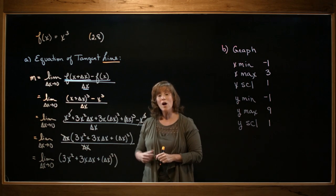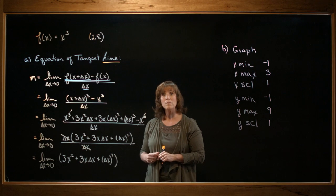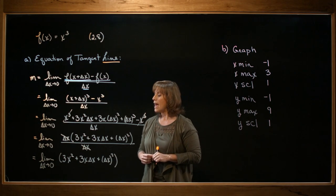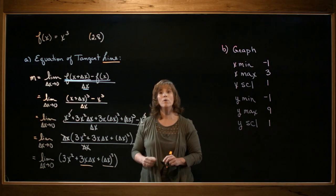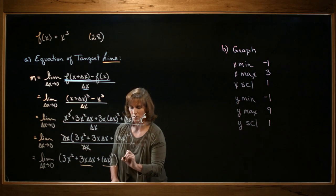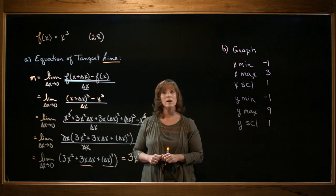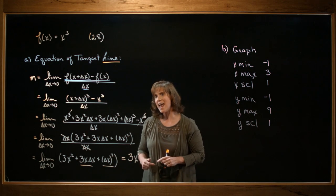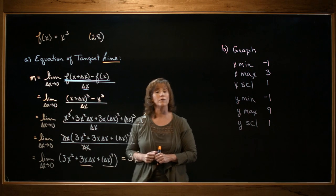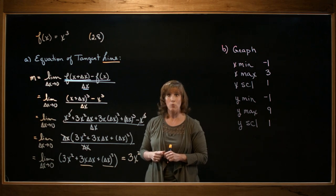Okay, well, I no longer have that indeterminate form 0 divided by 0, so I'm going to be able to evaluate my limit. As delta x approaches 0, notice that the second and the third term both go to 0. The first term remains a 3x squared. So I've evaluated the slope of my tangent line at any point along the curve x cubed. Now I want to find out what happens at the point (2,8).